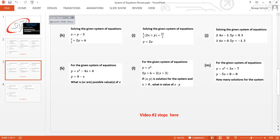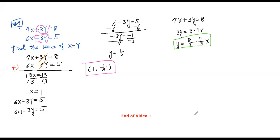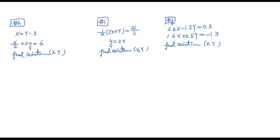Let's go to the whiteboard and start working on those six problems. So for this problem here, we have the equations: x equals y minus 3, and x over 2 plus 2y equals 6.